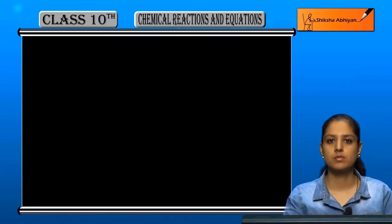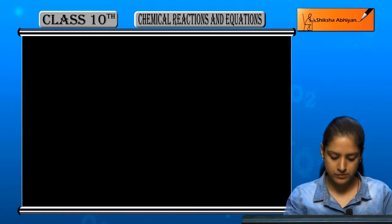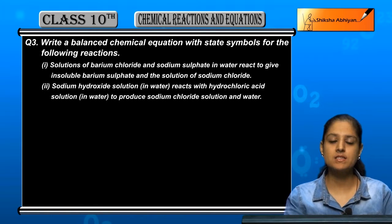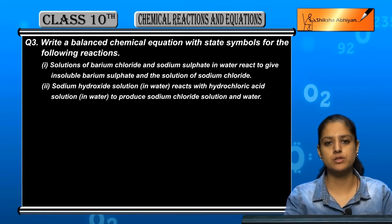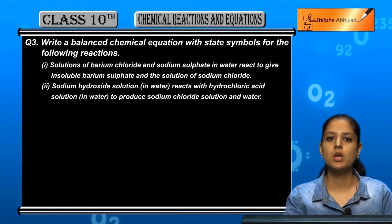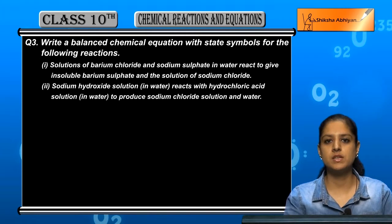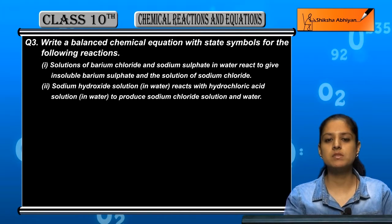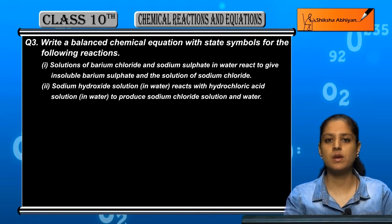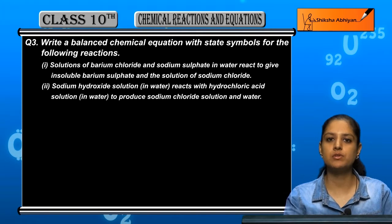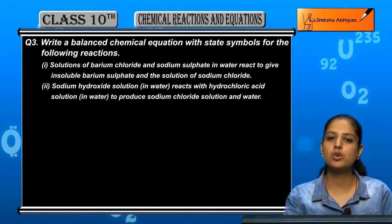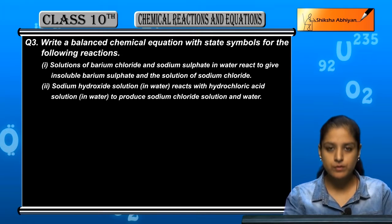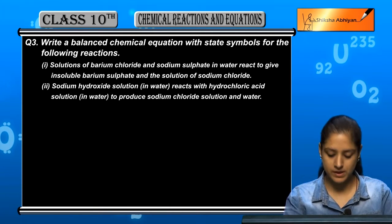Question number 3: write balanced chemical equations with state symbols of the following reactions. The state symbols we need to mention are solid, liquid, gas, or aqueous solution. We mention proper chemical equations which are balanced.